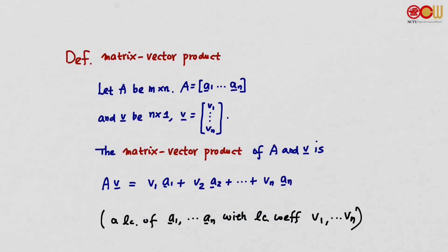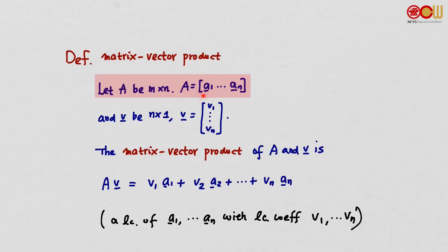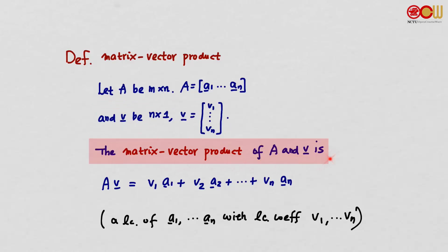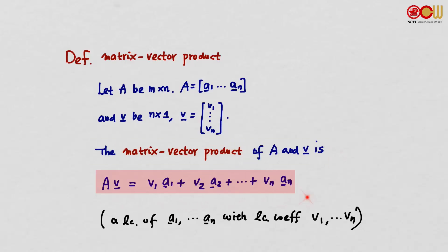The second definition in this section is the matrix vector product. If A is an n×n matrix with column vectors a1 to an, and v is an n×1 vector with entries v1 to vn, then the matrix vector product Av is defined as v1·a1 + v2·a2 + ... + vn·an. This is a linear combination of the column vectors of A, with linear combination coefficients v1 to vn — the entries of v.